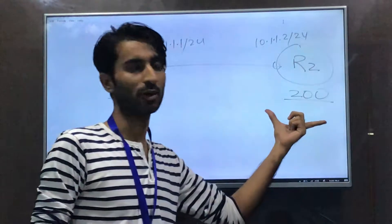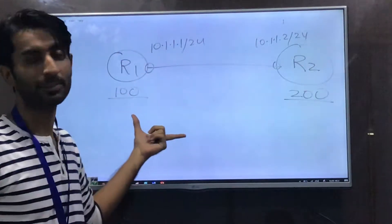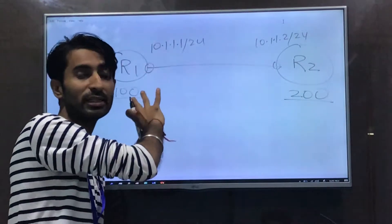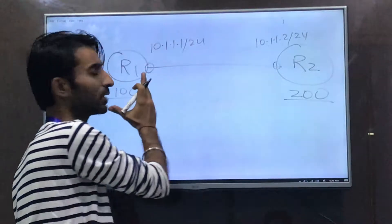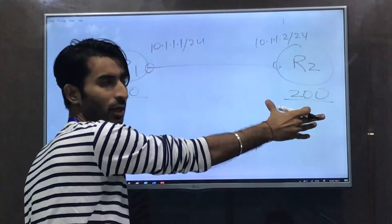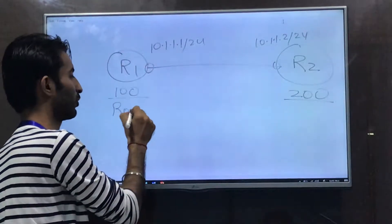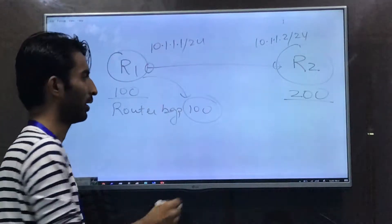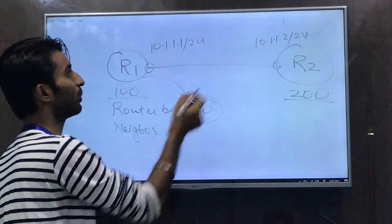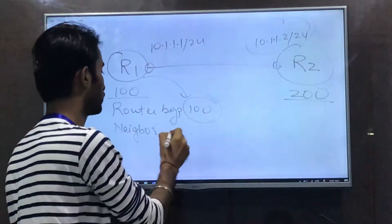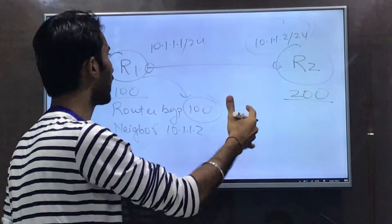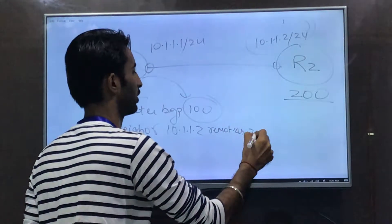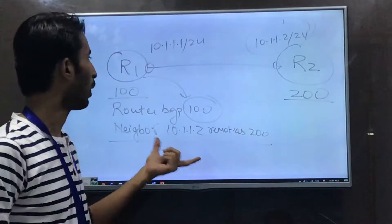Since BGP uses TCP at Layer 4, a three-way handshake will occur first. On R1 you start with the command 'router bgp 100', assigning it AS-100, then provide the neighbor statement: neighbor 10.1.1.2 remote-as 200. This tells R1 that its neighbor is 10.1.1.2 and that neighbor belongs to AS-200.